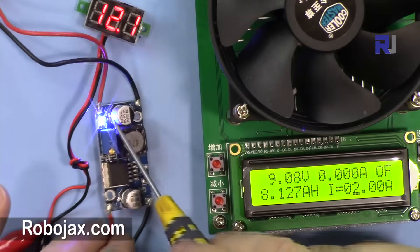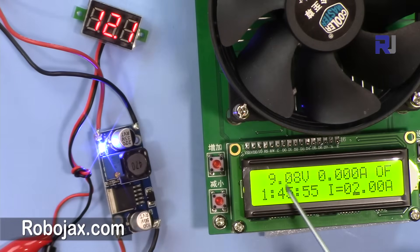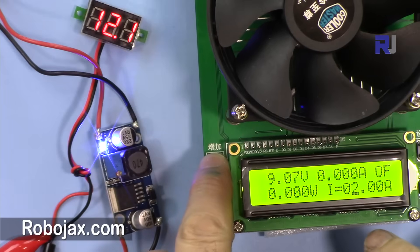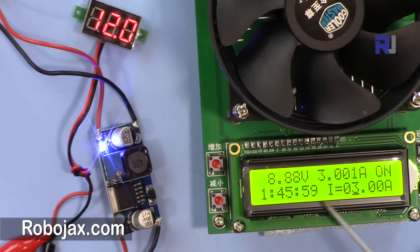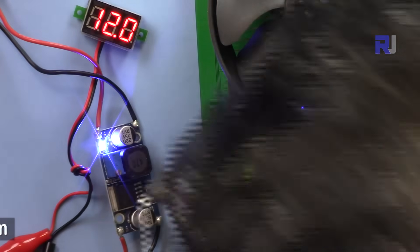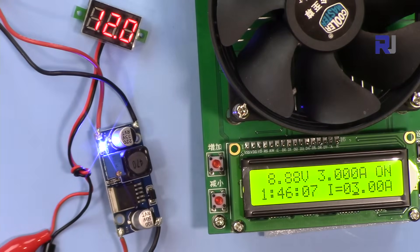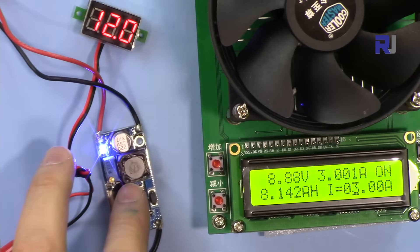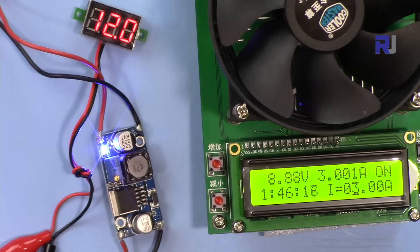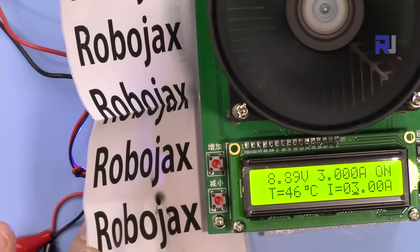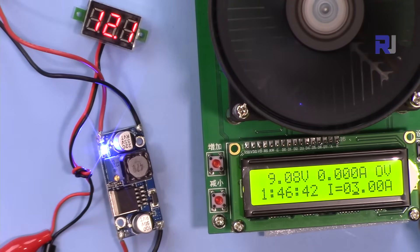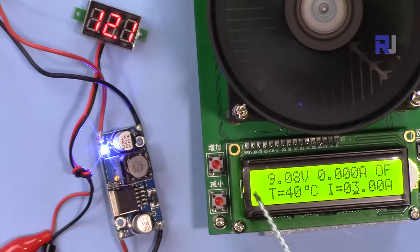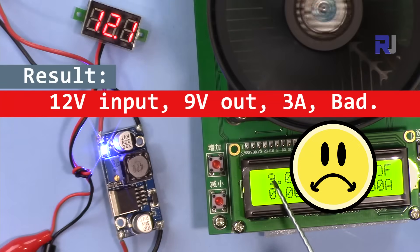And now let's test it with 12 volts input and 9 volts output. Let me go for 3 amp. So now we have 3 amp. Very hot immediately. So that is 27 watts.